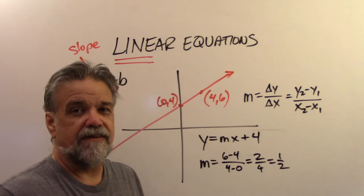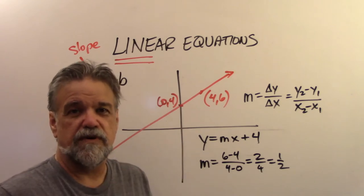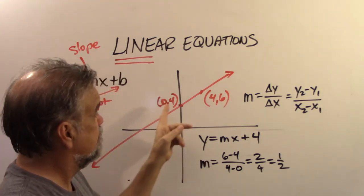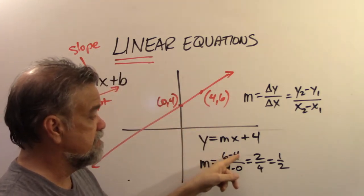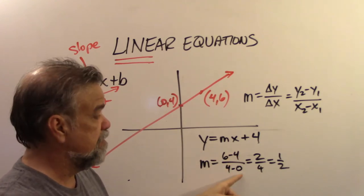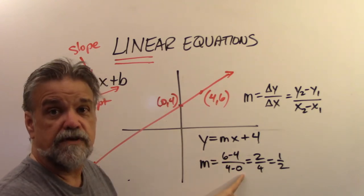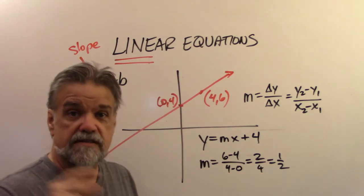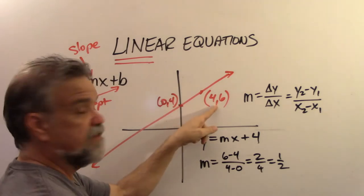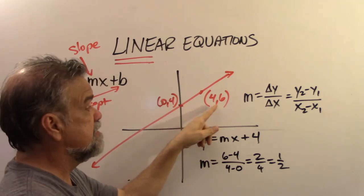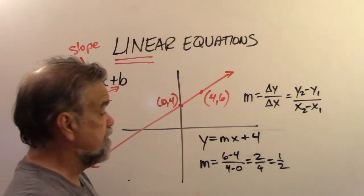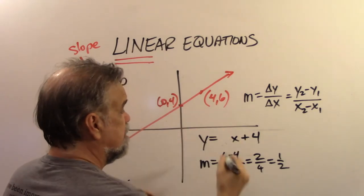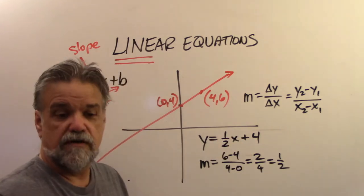If you're thinking that switching the order of those points will get something different — no, it won't. If we used 4 first: 4 minus 6 is negative 2, over 0 minus 4, which is negative 4 — and negative 2 over negative 4 is still 1/2. It's always going to be 1/2 as long as you are consistent in your order: if you use one point first for y's, use that same point first for x's. So this line is y equals 1/2 x plus 4.